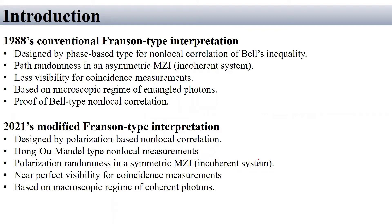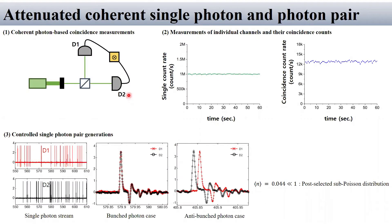In this chapter, new modified Franson-type experiment is introduced and fundamental quantum entanglement is discussed from our new experimental research. This is the pretest for the main experiment.